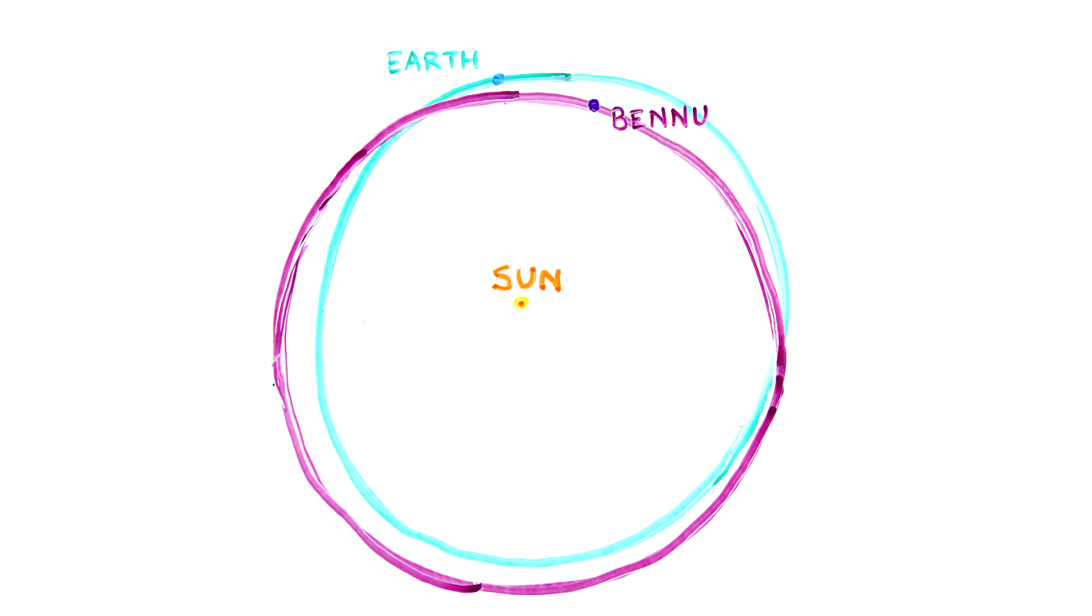Scientists are tracking Bennu's orbit, and they predict that it will come closer to the Earth than the Moon in 2135, in about 200 years. This close approach will change Bennu's orbit, making it difficult to predict where it will go next.